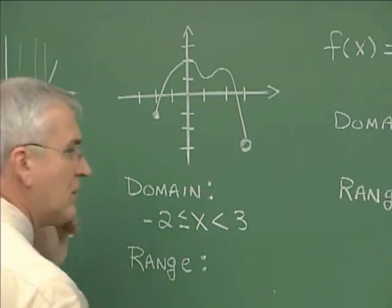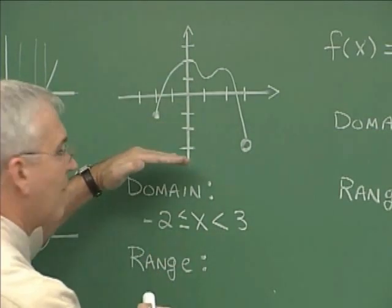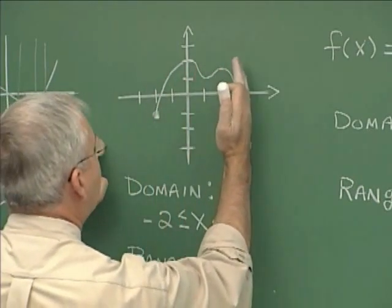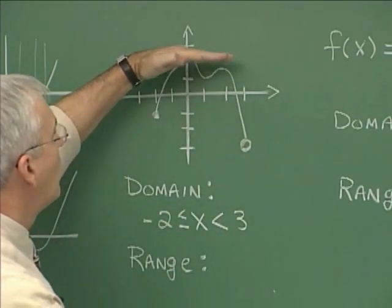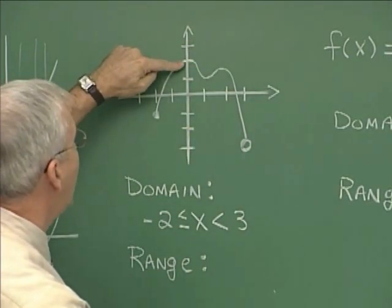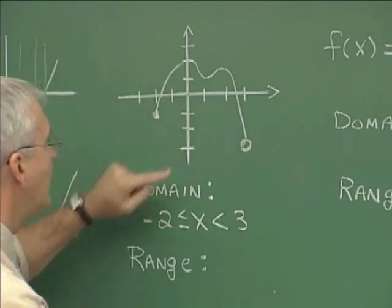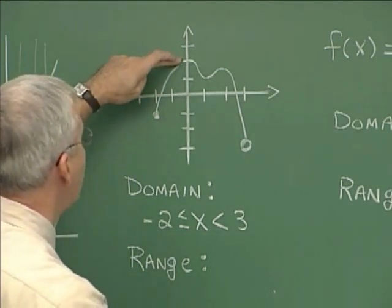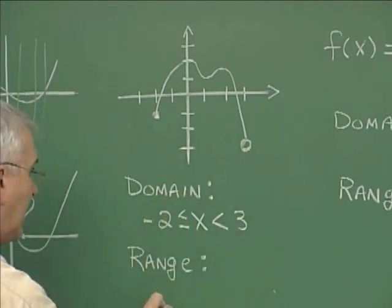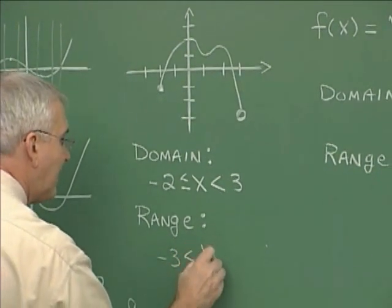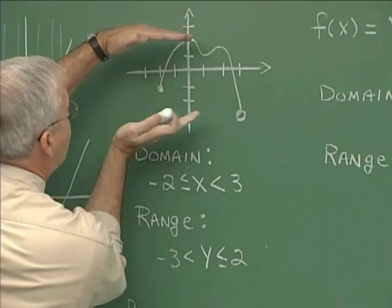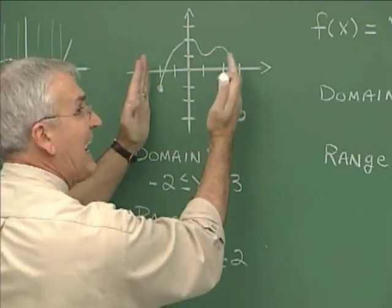The range is a similar idea except we're looking vertically — it has to do with y values that are on the graph. We go all the way up to 2 for the highest vertical distance and the lowest is all the way down at negative 3. So the range would be values from negative 3 to 2. Usually written with the lowest value first: negative 3 is strictly less than the y values on the graph and they are less than or equal to 2.